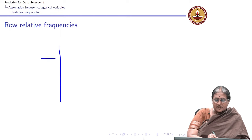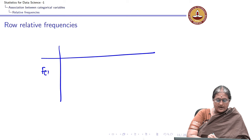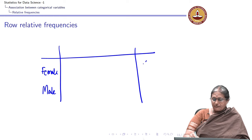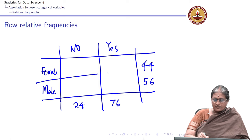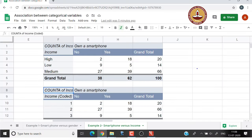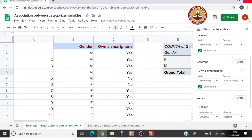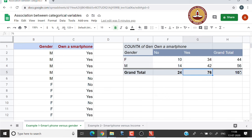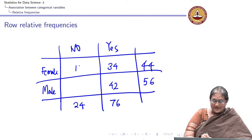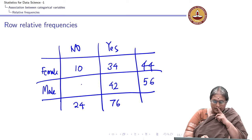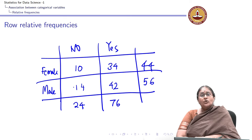In a contingency table, for example, I had 44 females and 56 males. I had 76 people who owned a cell phone and 24 people who did not. In this data set I have 42 men and 34 women who owned a cell phone, and 10 women and 14 men who did not own a cell phone.